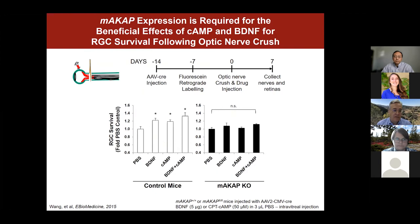The most important experiment we've done was published in 2015, where we acquired a MAKA-cap conditional knockout mouse using Flox technology. We knocked out MAKA-cap specifically in retinal ganglion cells and then, using the optic nerve crush model, demonstrated the relevance of this scaffold to neuroprotection.